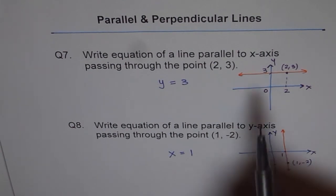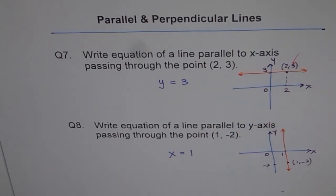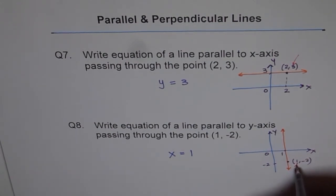So what do you note here? You note, if the line is horizontal, the equation is the y value which remains same. If the line is vertical, then the equation is x equals to x value which remains same. Okay?